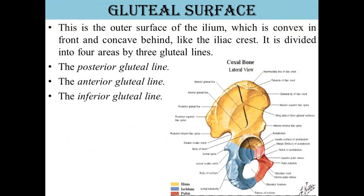Next is the gluteal surface. This is the outer surface of the ilium, which is convex in front and concave behind, like the iliac crest. It is divided into four areas by three gluteal lines: the posterior gluteal line, the anterior gluteal line, and the inferior gluteal line.